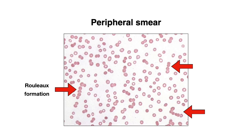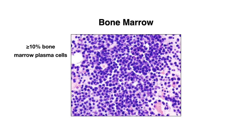Now that we've covered some of the symptoms, signs, and lab findings of multiple myeloma, let's talk about how you definitively diagnose this disease. Diagnosis requires that at least 10% of the patient's bone marrow consists of plasma cells, and there must also be evidence of end organ damage, which we define as the CRAB findings discussed earlier.